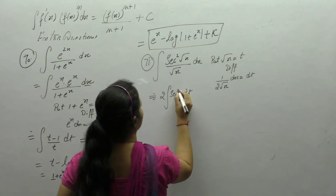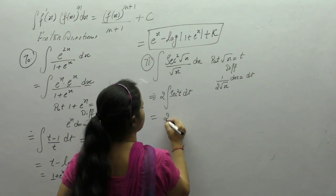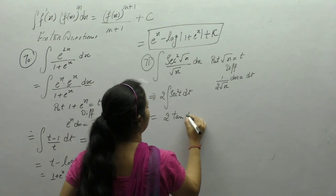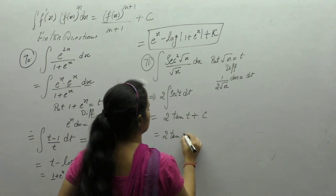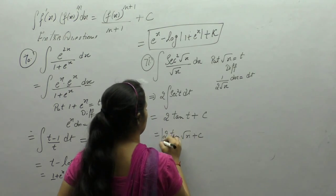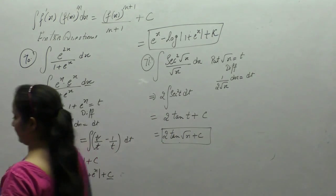Sec squared t. Integral of sec squared is tan t. And t here is square root of x plus c.